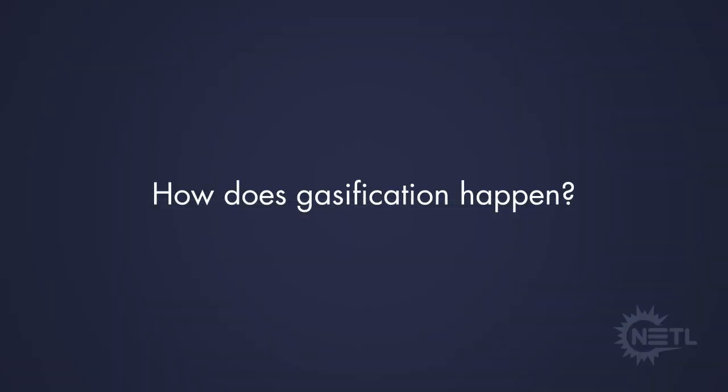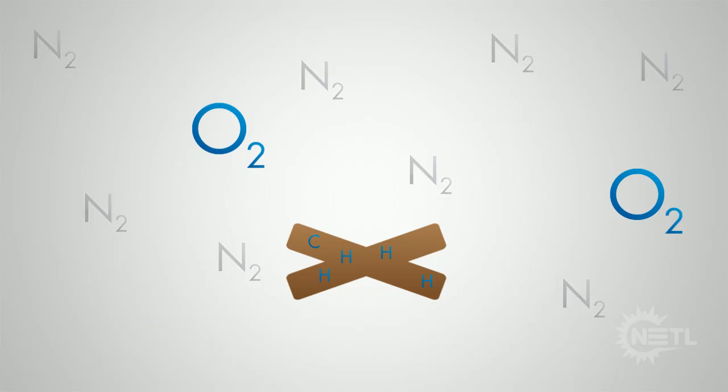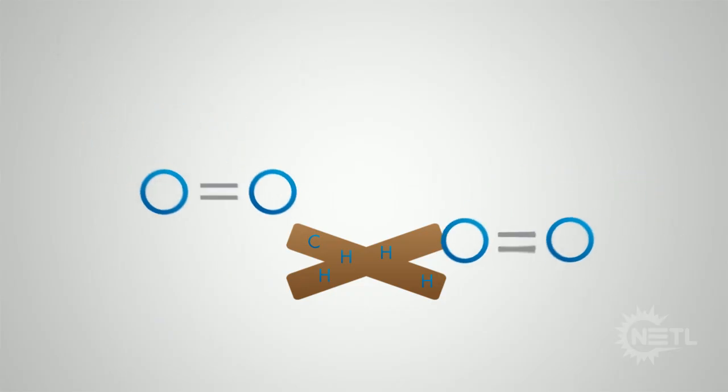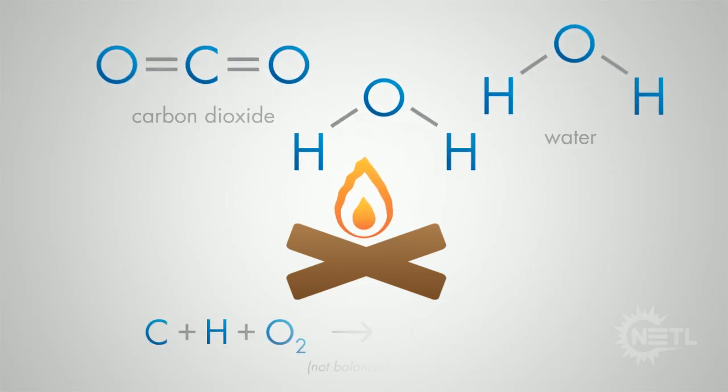So, how does gasification happen? Let's start with fire, also called combustion. Wood, like coal, is mostly made up of carbon, hydrogen, and compounds that do not burn, called ash. Air is mostly oxygen and nitrogen. During combustion, oxygen bonds with the carbon and hydrogen, creating a chemical reaction that gives off so much heat it produces fire.